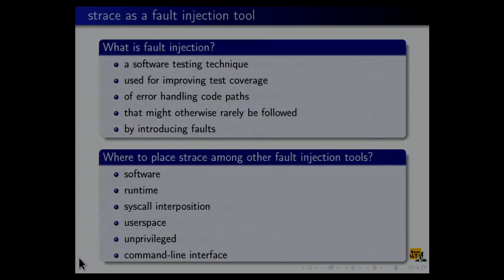So, what is fault injection? Just a brief recollection: it's a software testing technique used for improving test coverage, mostly of error handling paths that might otherwise rarely be followed, by introducing faults. This is a nice definition from Wikipedia. So, where do we place strace among other fault injection tools? It's obviously software, it's runtime — most instrumentation tools are compile time, this is runtime. It works by means of syscall interposition. It's user space, unlike many current techniques, it's unprivileged, and it has a traditional command line interface.